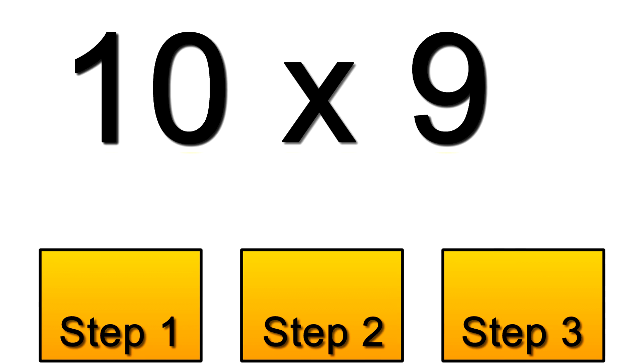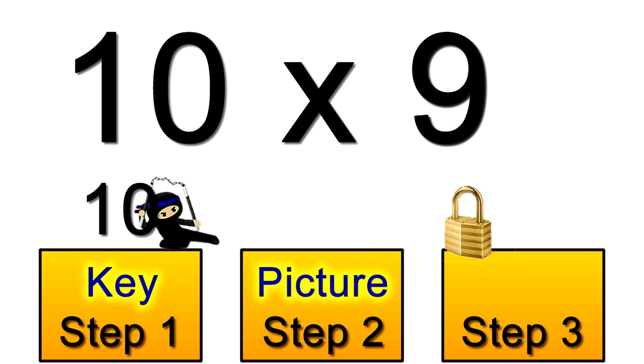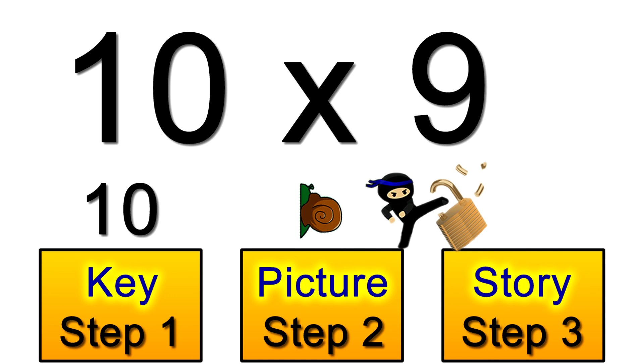Let me show you some examples. Let's start with 10 times 9. You'll learn it's much quicker to multiply by 10 than by 9. So we choose 10 as the key. Now the picture for 10 is a snail. Can you see how that snail looks like a 10? Well all of my pictures have an easy link like that.